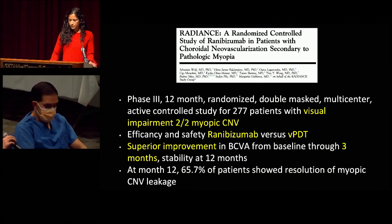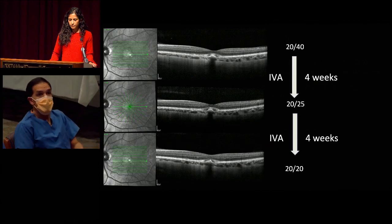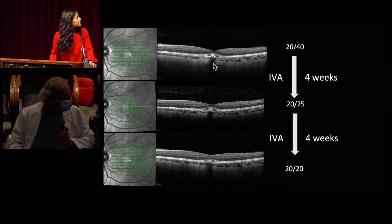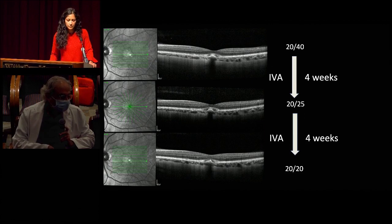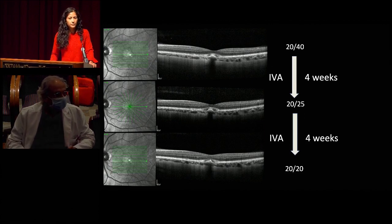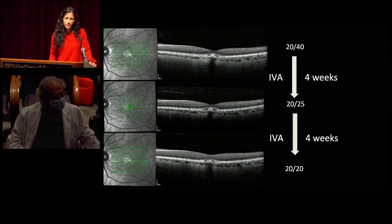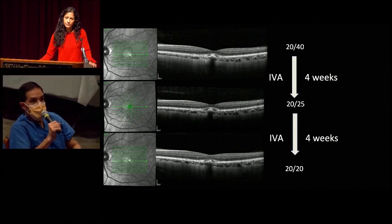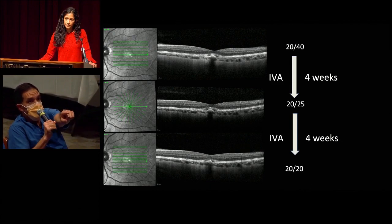Going back to the OCT, there is a question of whether a finding represents a short posterior ciliary vessel causing chronic trauma to Bruch's membrane or is simply optical shadowing from blood — likely the latter. On the baseline image, with subretinal fluid present and possible hemorrhage, treatment is warranted even at 20-20 vision. There is still activity of that CNVM, and the recurrence rate would be higher if left untreated versus treating to total dryness.